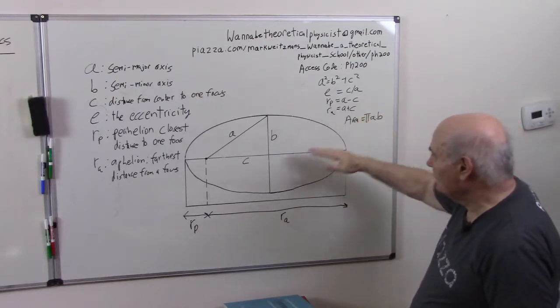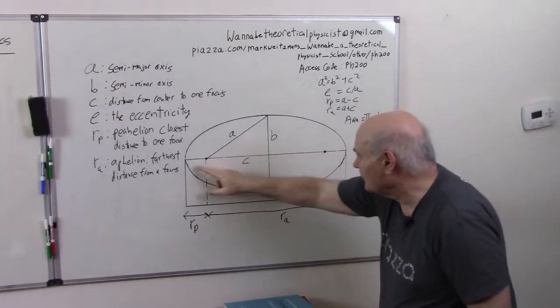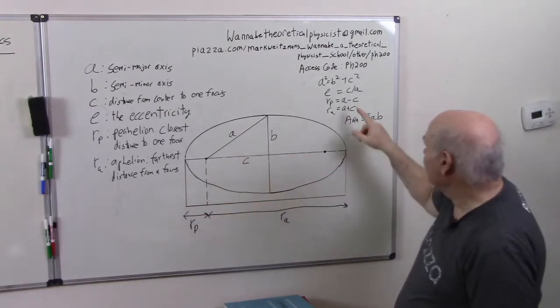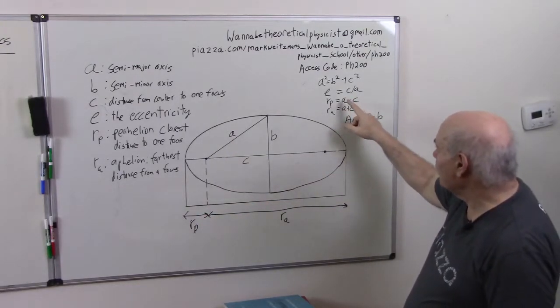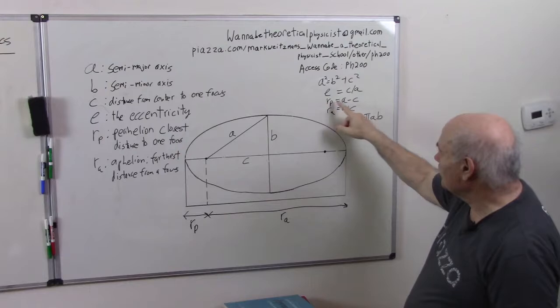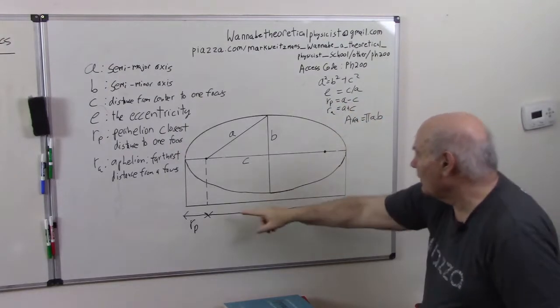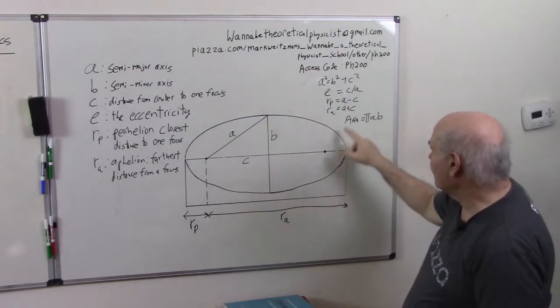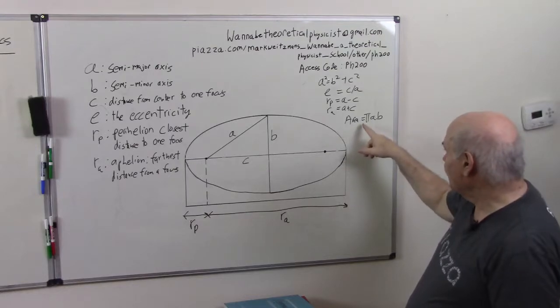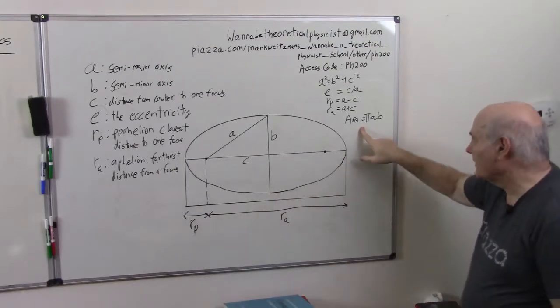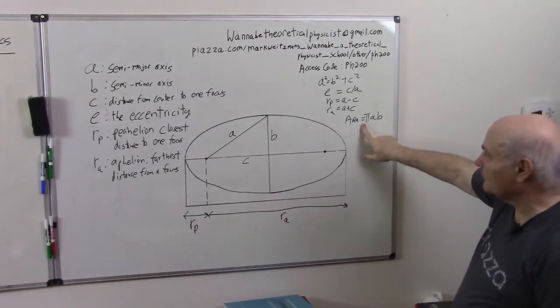RP, the perhelion distance, is from here to here, which is A minus C, so RP is A minus C. RA over here is C plus this distance which is A. And sometimes for Kepler's third law, you might need to remember that the area of an ellipse is Pi AB.